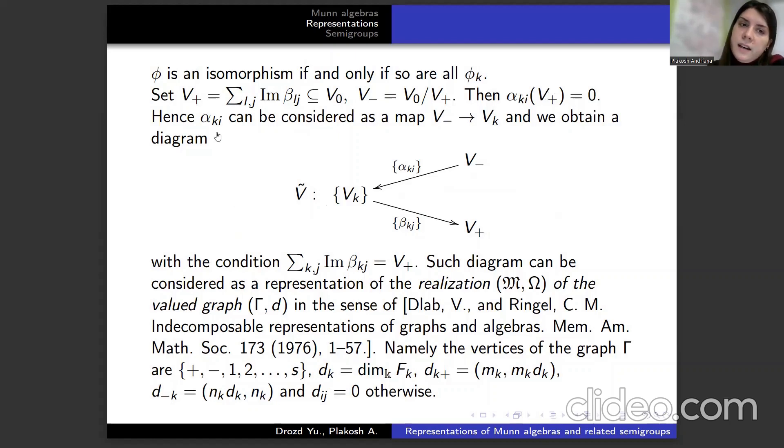Hence, αₖᵢ can be considered as a map and we obtain some diagram with some conditions. Such diagram can be considered as a representation of the realization (M,ω) of the valued graph H in the sense of Dlab and Ringel.